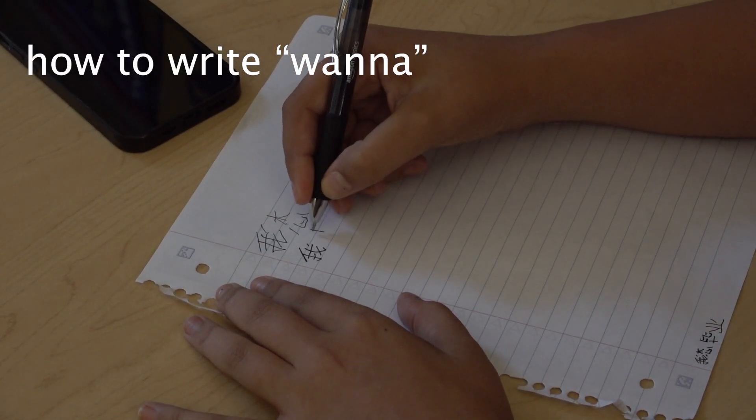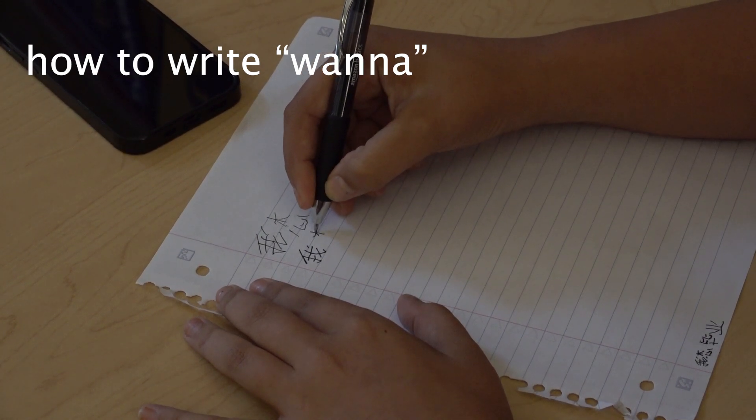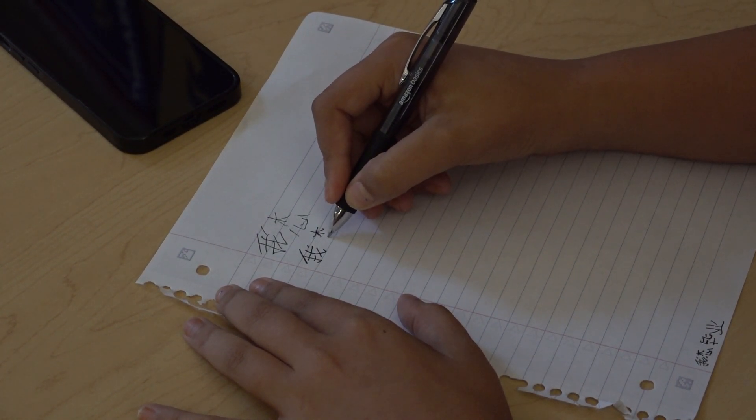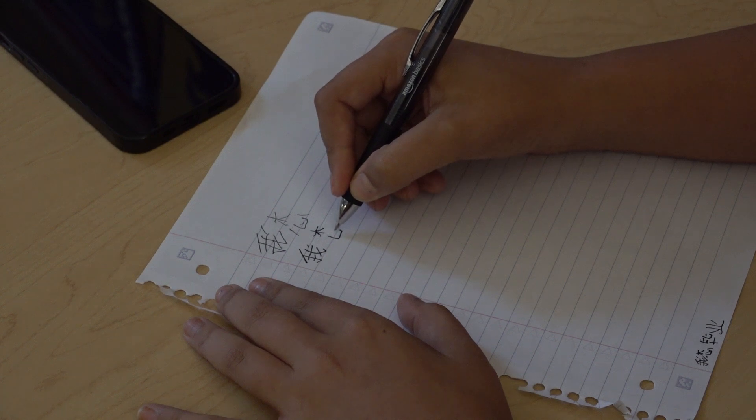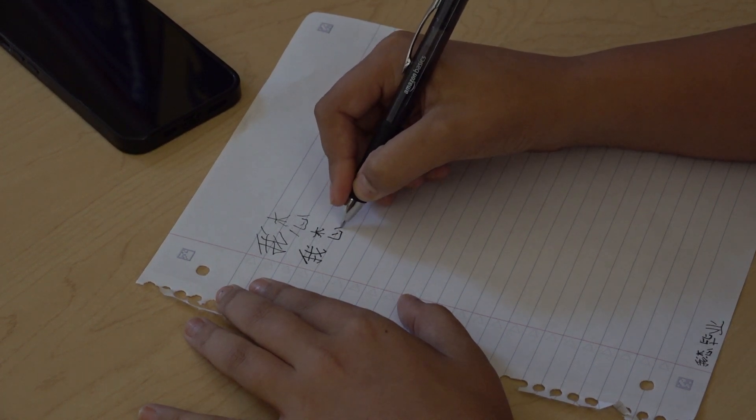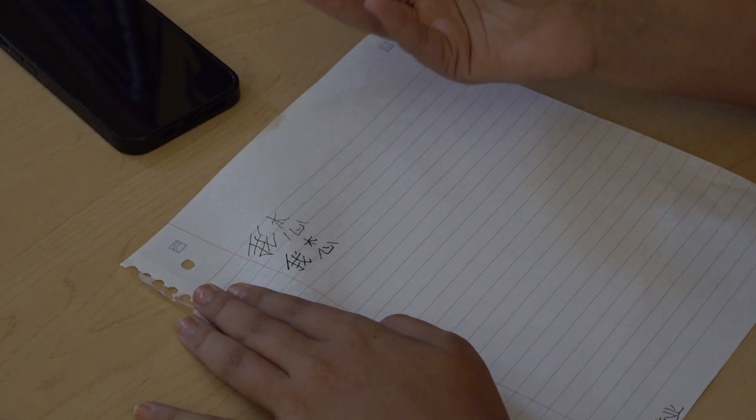So you want to make like a T and then two lines coming out of the corners of the T, and then an L with a little tail at the end. A line inside it, a line outside the L, and one on the opposite side. And that's how you write want.